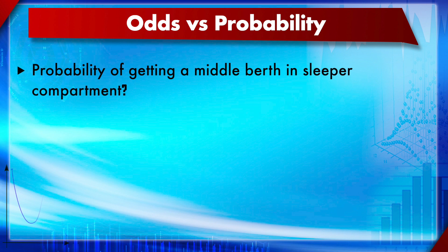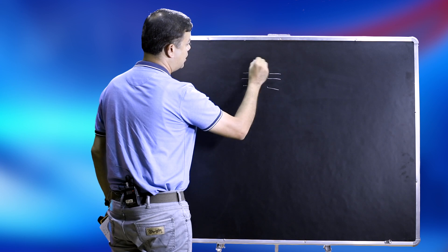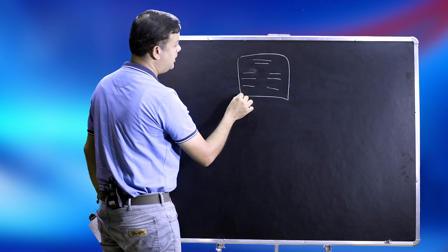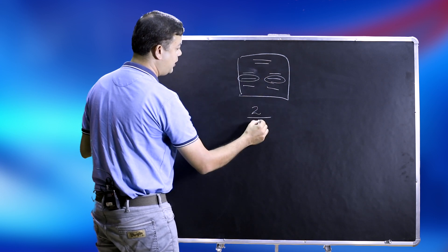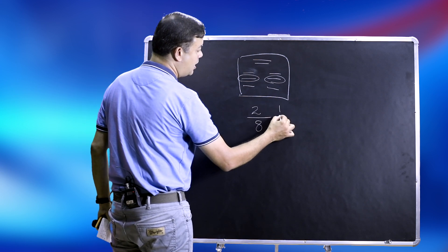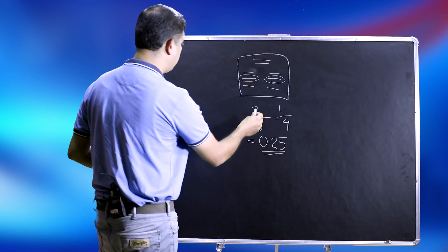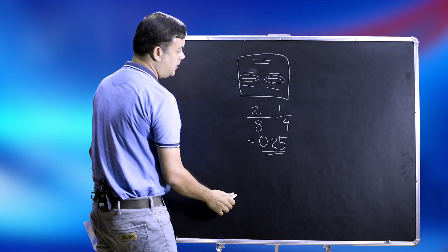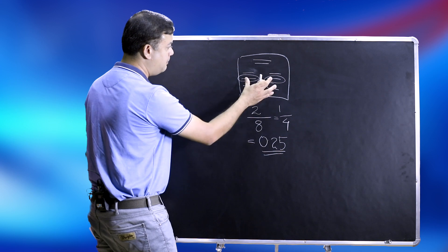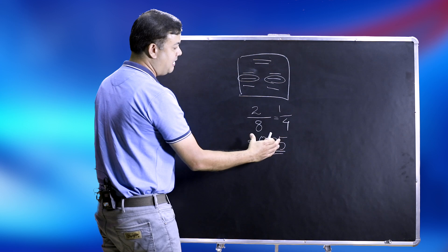Example 3: Probability of getting a middle berth in a railway sleeper compartment. A sleeper coupe has berths arranged as three on one side and two side berths — 8 berths total, of which 2 are middle berths. So P = 2/8 = 1/4 = 0.25, a 25% chance. In reality, fewer people opt for the middle berth so the actual chance is higher — that requires Bayesian logic, which will be covered in a later module.